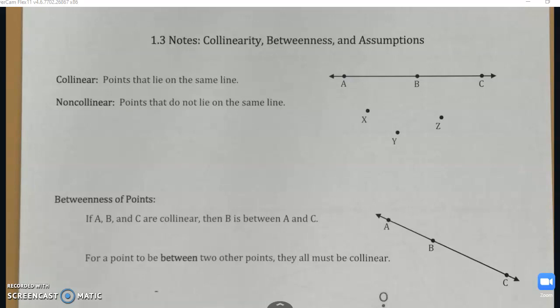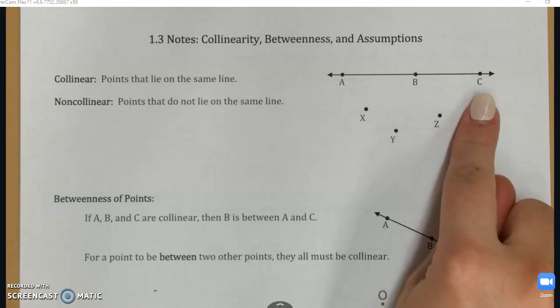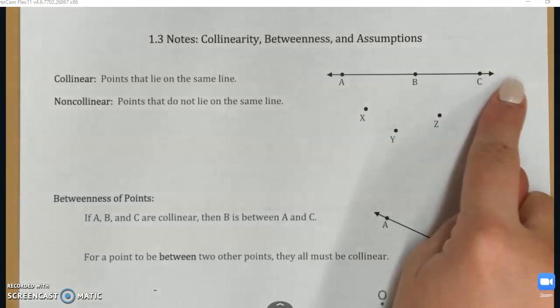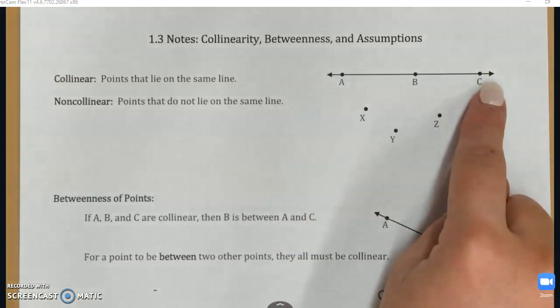Let's start right off the bat with collinear versus non-collinear. These are both vocab terms that we talked about with our vocab page. Collinear means all of the points lie on the same singular line, and non-collinear means they do not lie on the same line. So an example of each is here, A, B, and C. There is one line that connects all three points, so we can call them collinear.